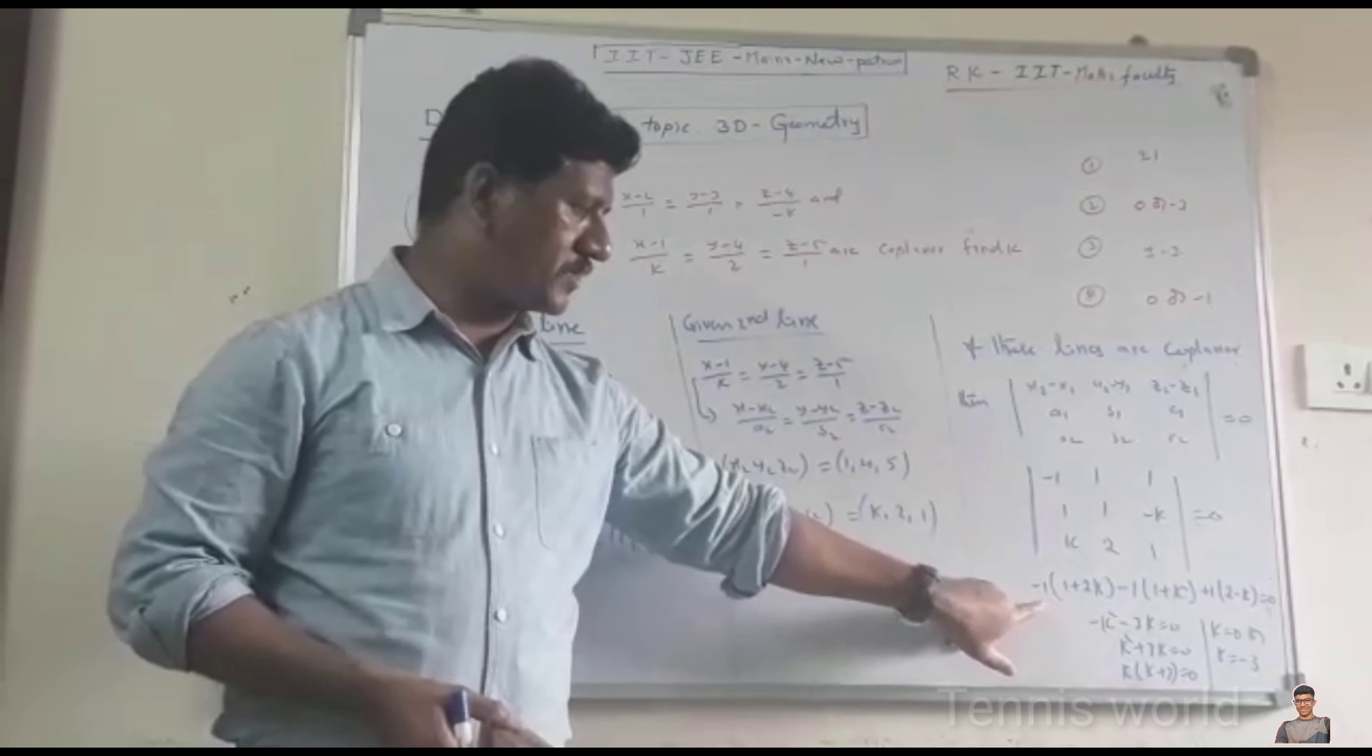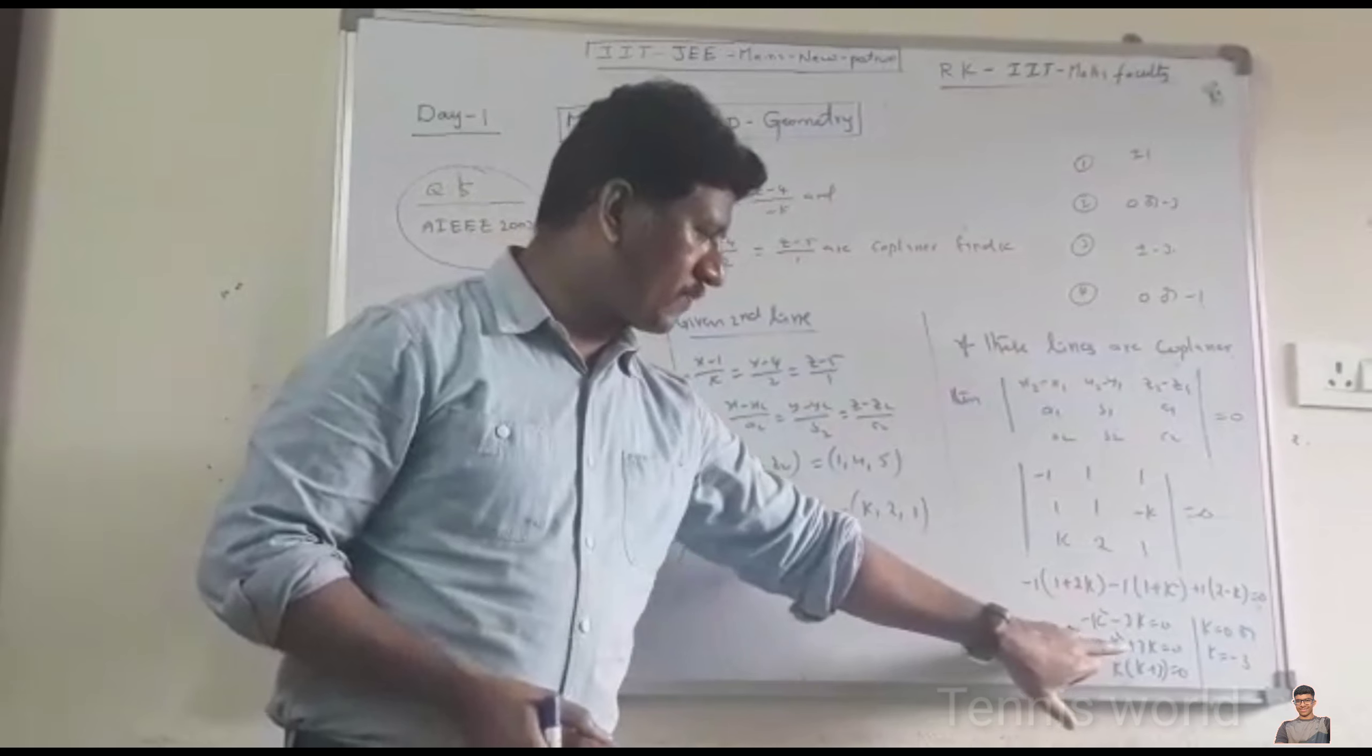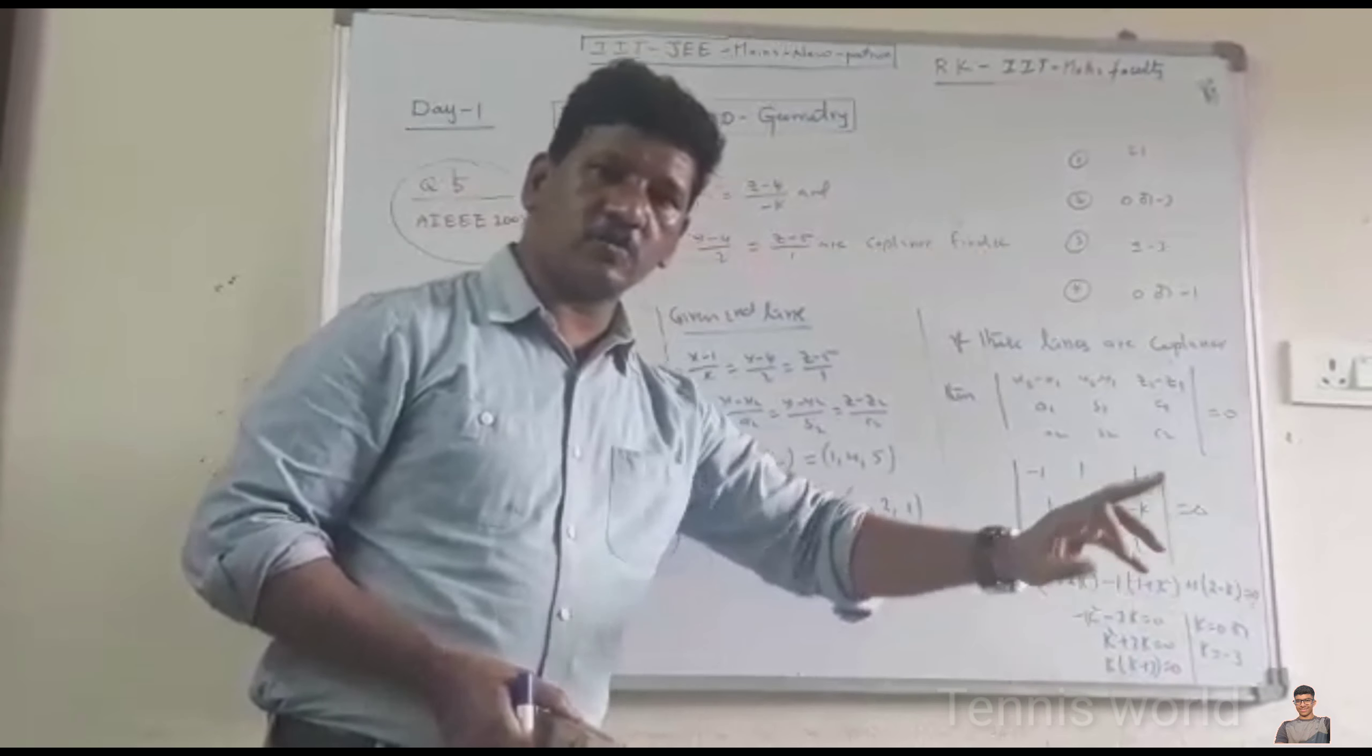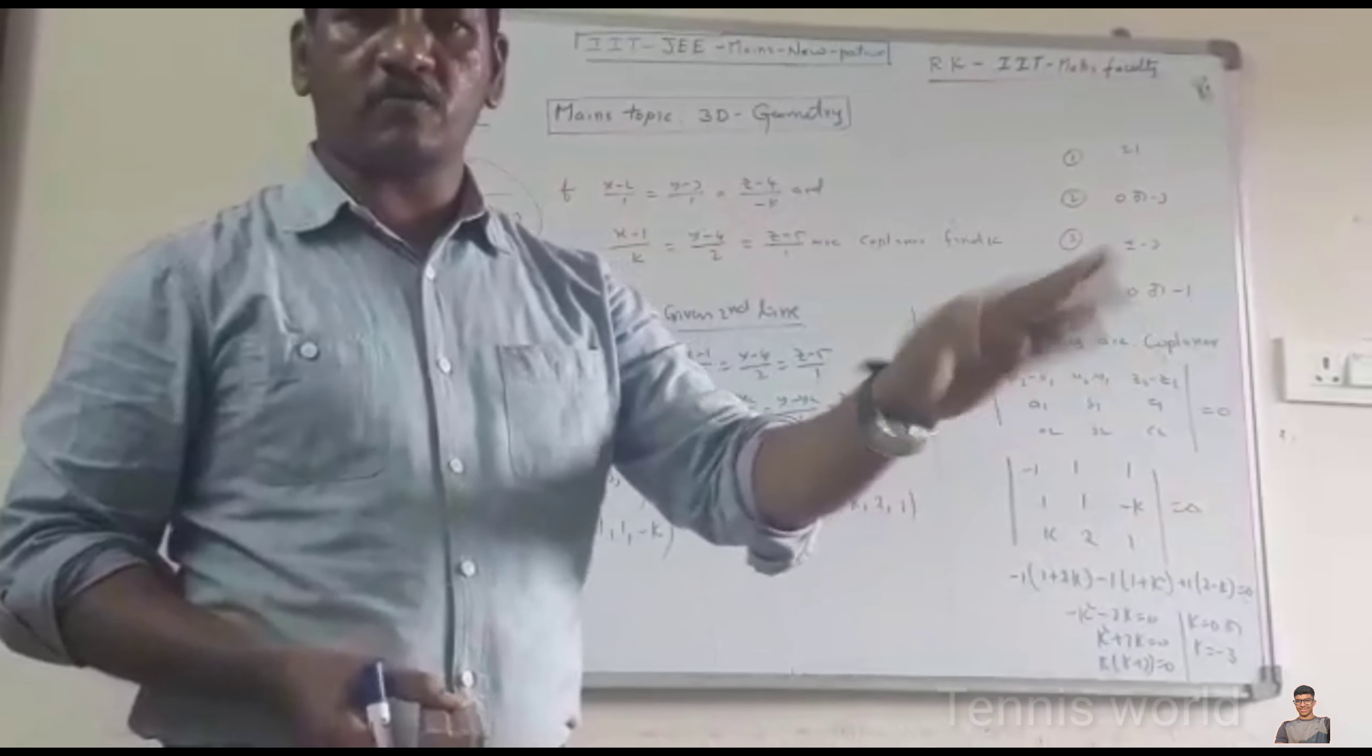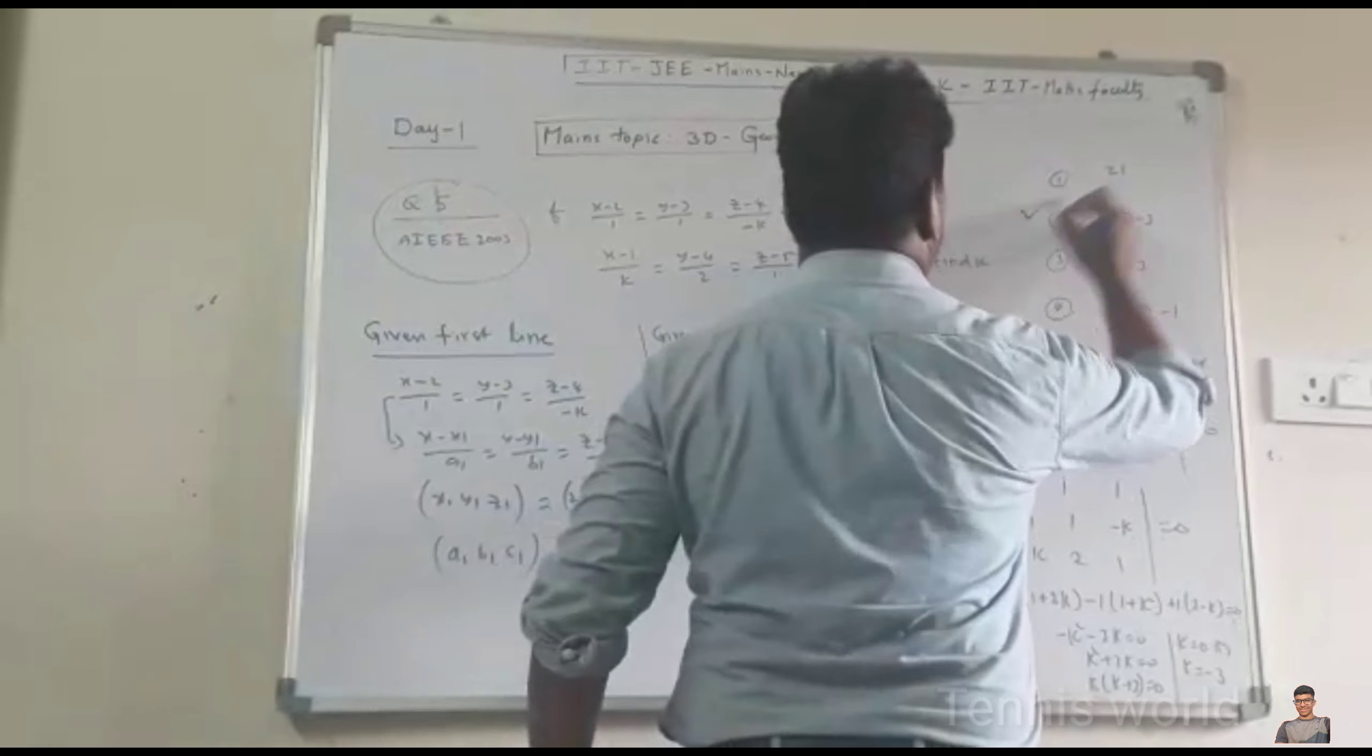After simplification this step will come. If you multiply both sides with minus symbol, what you get? K² + 3K = 0. So then K(K+3) = 0. Equate this factor to 0 and equate this factor also to 0. That's why K = 0 and K = -3. Now which option? Here 0 and -3, second option.